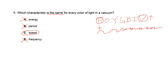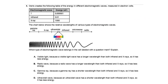Number four: Osiris creates a table of the energy in different electromagnetic waves measured in electron volts. Looking at the table, the energy increases as we go down — the top entry has the least amount of energy and X-ray at the bottom has the greatest amount of energy. There is also a chart showing the relative wavelengths of various types of electromagnetic waves.